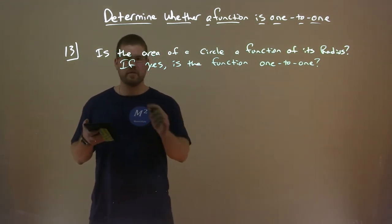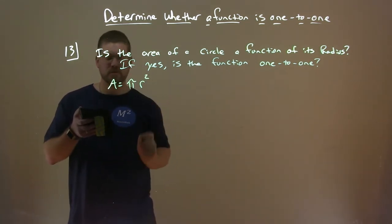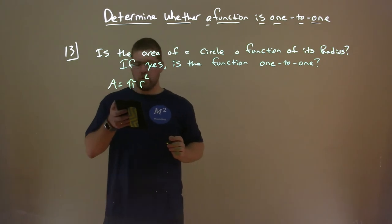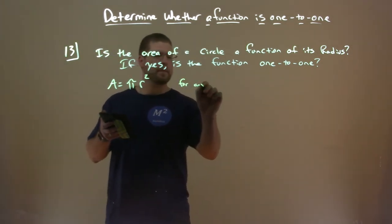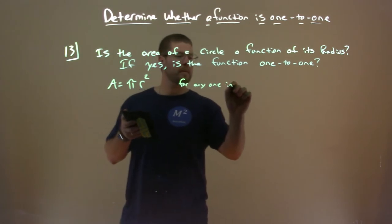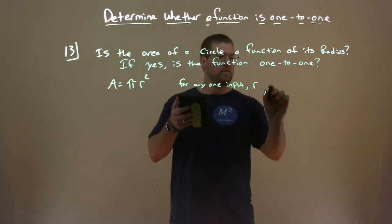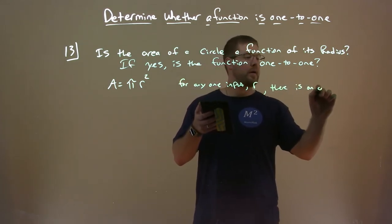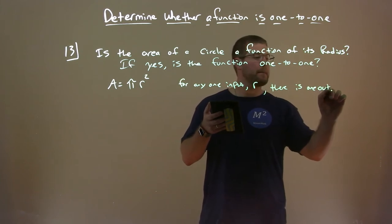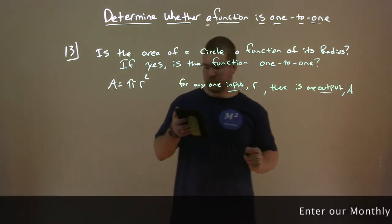Well, what's the formula for the area of a circle? Area equals pi r squared. So for any one input, one input r, there is one output, which is our area.